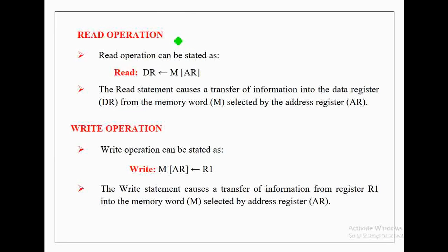Let us now discuss how a read operation can be stated in RTL with an example. The meaning of the given register transfer statement is that data is transferred from memory — stored at the address specified by the address register — to the data register, provided that the read signal of the memory unit must be active.